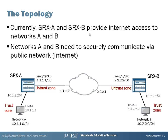SRX-A and SRX-B currently provide Internet access to Networks A and B, but Networks A and B cannot communicate with each other at this time. What we want to do is create a secure tunnel through the Internet between SRX-A and SRX-B, and make Networks A and B communicate through this tunnel.